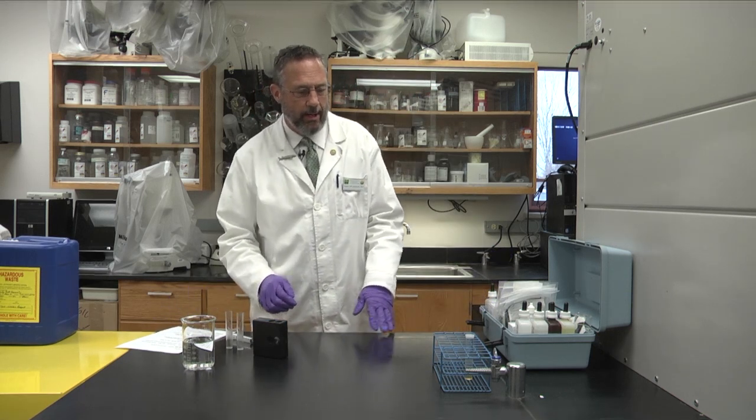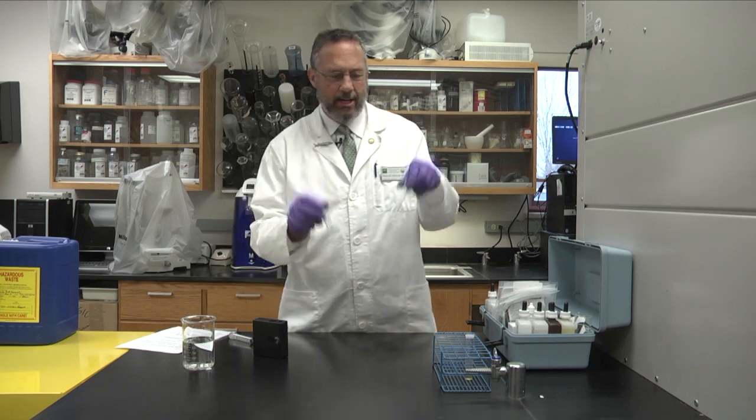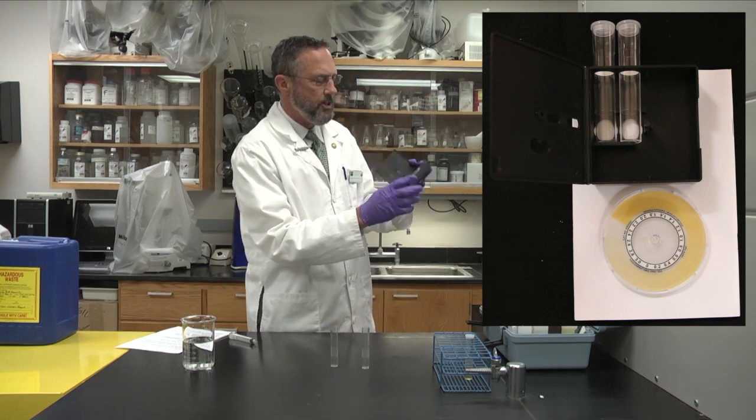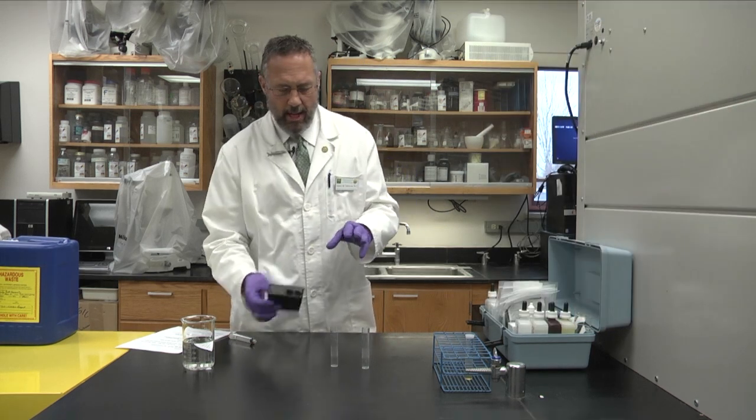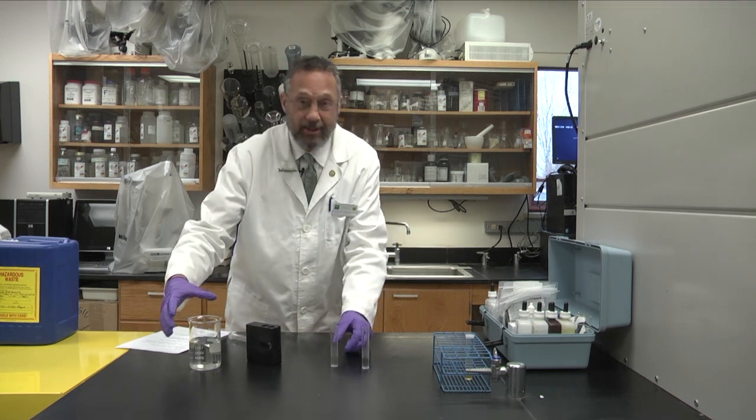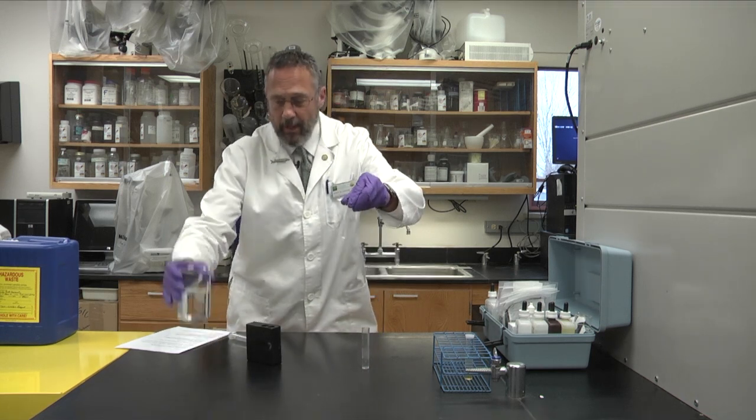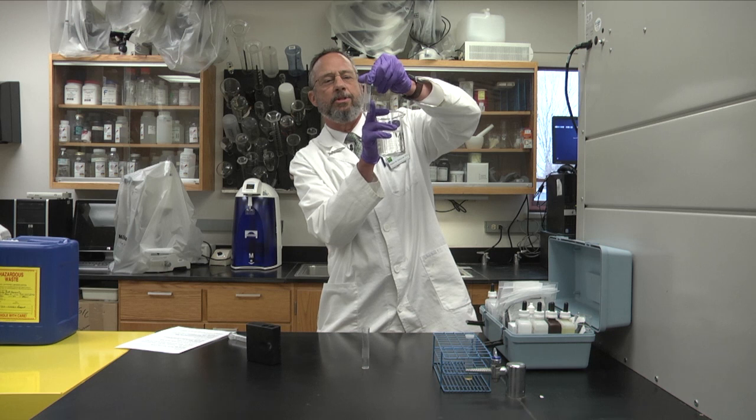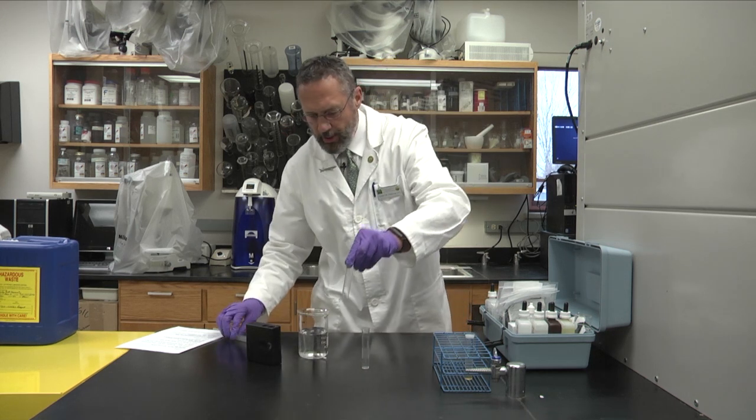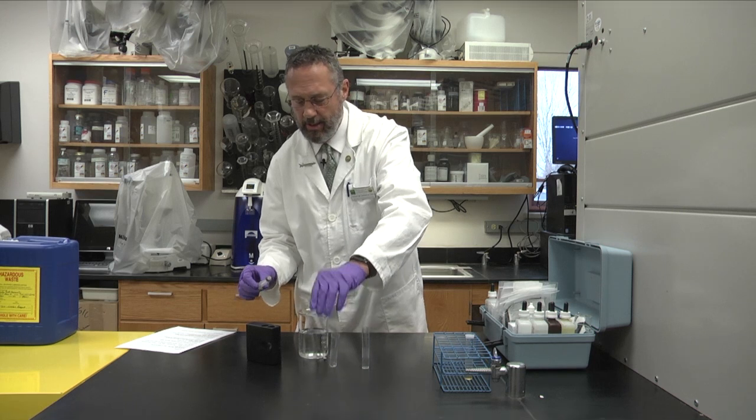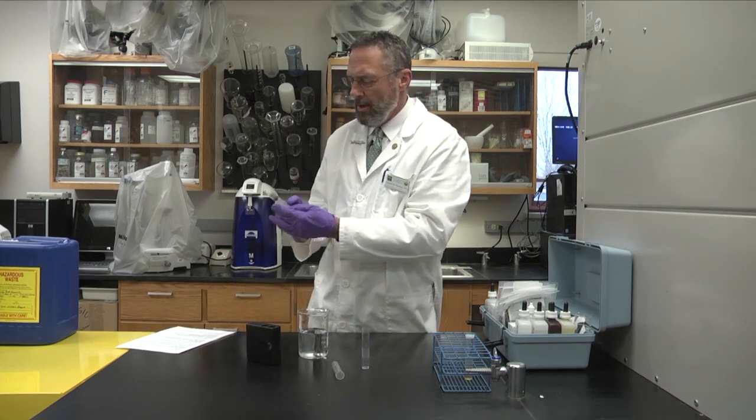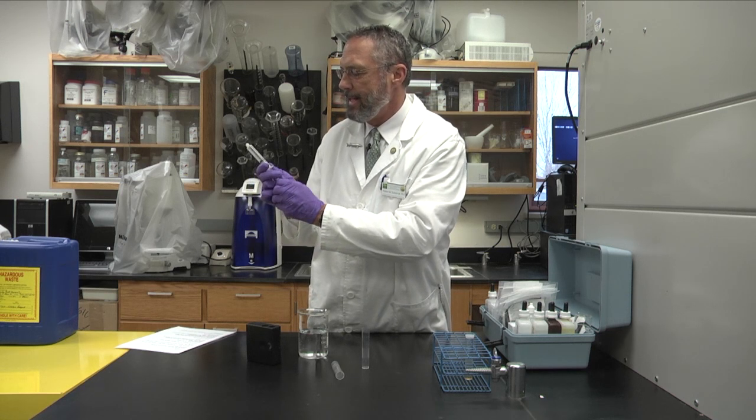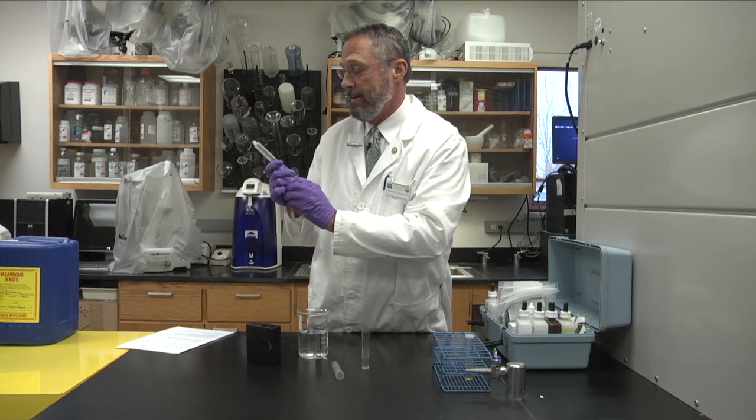To test for ammonia, we use these test tubes that come with the kit and we use this box here. It has an ammonia color wheel in the box and we use five cc's or five milliliters of the tank water. You can either fill it up to where the frosting starts in this tube or you can, I think it's a little bit easier actually, to use a syringe. So the syringe is marked off in the cc's or cubic centimeters. Ten cc's is the same thing as ten milliliters.